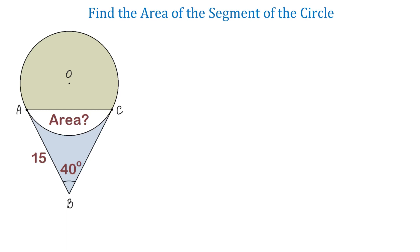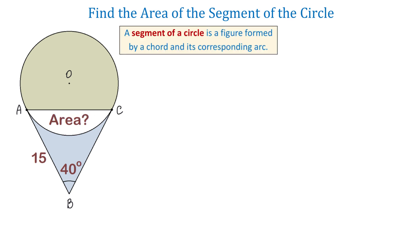In this figure we have a circle, and from a point outside the circle we have two tangents that form a 40 degree angle. The distance AB is 15 units. The white region is a segment of this circle — a figure formed by a chord and its corresponding arc. We need to find the area of this segment.